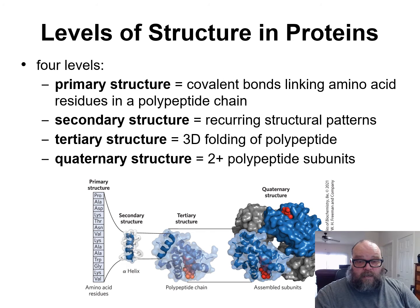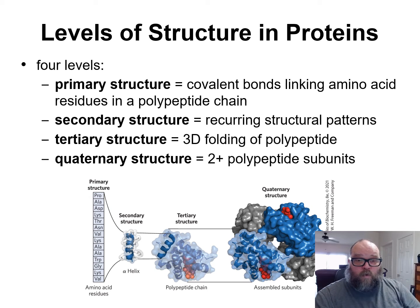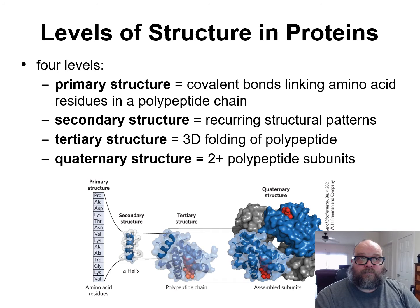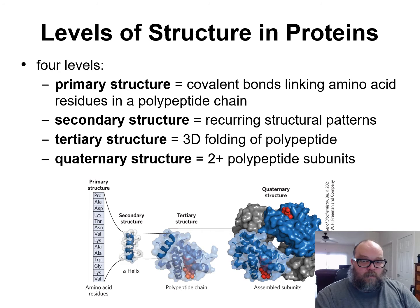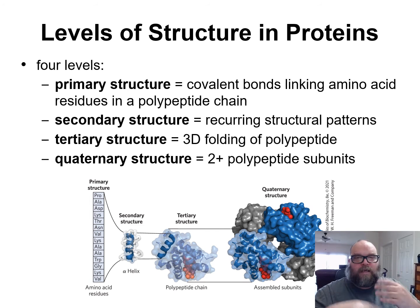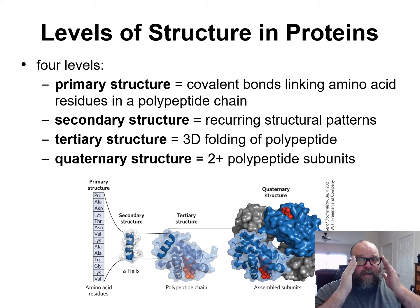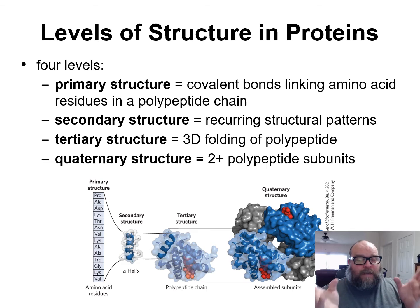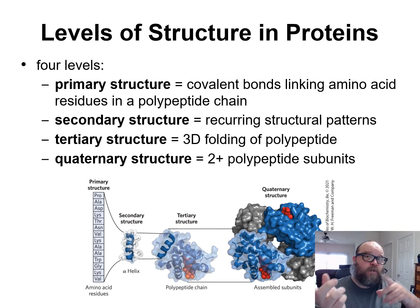Sometimes the final protein's quaternary structure needs multiple polypeptides — like hemoglobin: 2 alphas, 2 betas. They're held together by hydrogen bonds, disulfide bonds, and so on. Quaternary structure is whatever the final protein is — however many polypeptides, one or a dozen, as we saw in the previous lecture in that table.